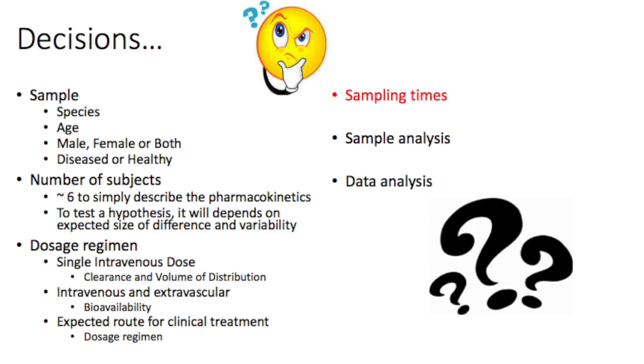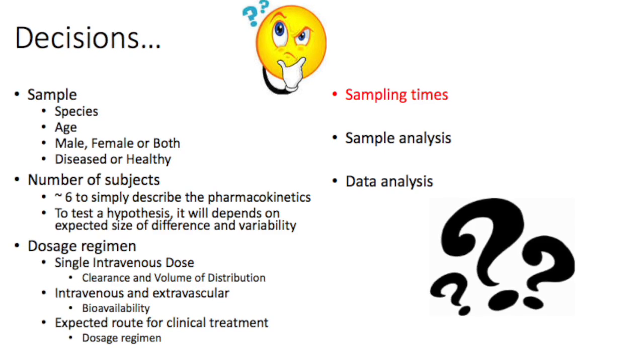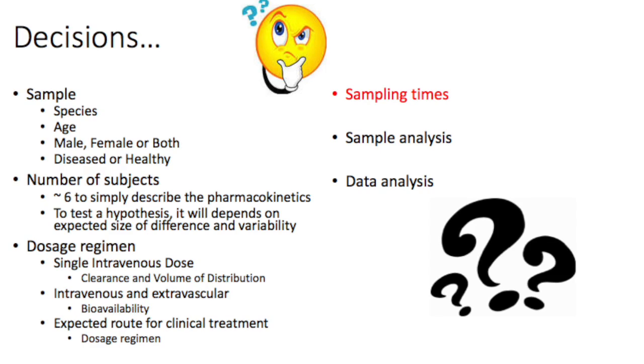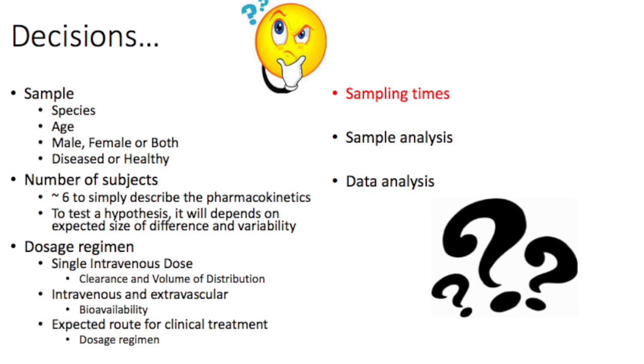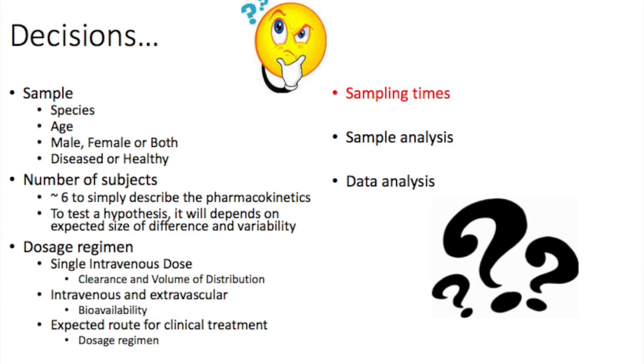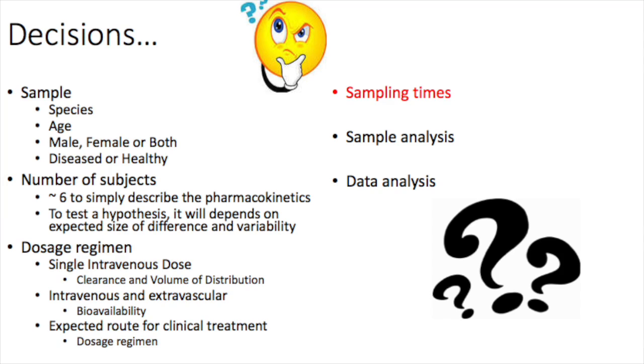Once you have selected the animals for your study, you now need to decide when to take blood samples to measure drug concentrations. You will also need to decide how these concentrations are going to be measured. The most common method is HPLC with different detection methods such as UV or mass spectrophotometry.